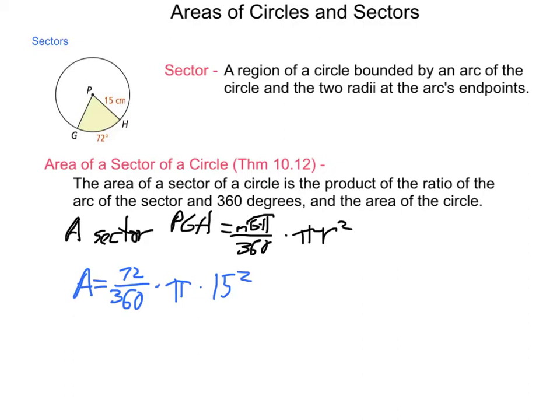Now, as we go through and do the computations of this, let's start with our squaring first. 15 squared is 225. 72 divided by 360 is 1 fifth. So, we have 1 fifth times pi times 225. So, multiplying this through a little bit, we come out with 45 pi as the area of that sector.